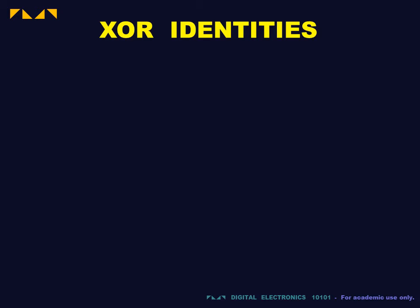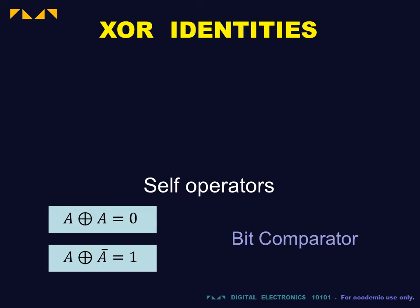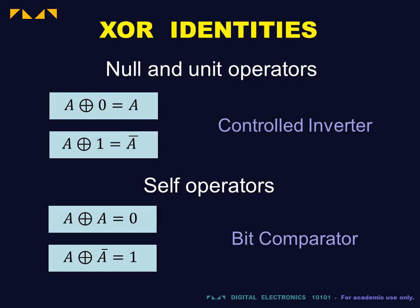Finally, we consider the XOR operation. In a previous video, we saw the role of XOR as a bit comparator. When used with 0 or 1, the XOR gate acts as a controlled inverter. The result is inverted if the operand is 1, and non-inverted if the operand is 0.